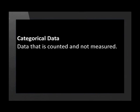Data can be classified as categorical and numerical. Categorical data is data that is counted and not measured. For example, counting the number of blue cars on the road is an example of categorical data.